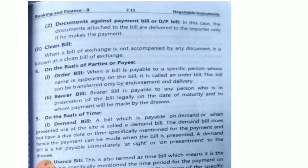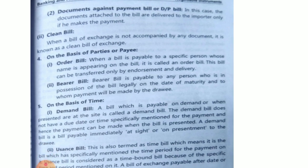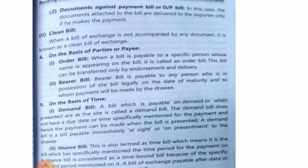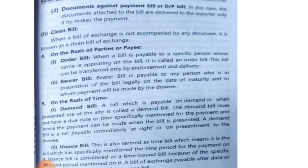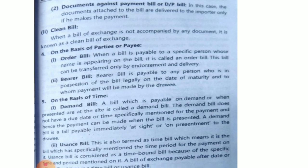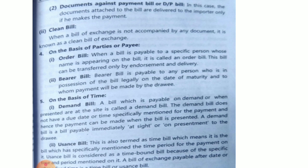On the basis of parties or payee, the first type is the order bill. When a bill is payable to a specific person whose name appears on the bill, it is called an order bill. The bill can be transferred only by endorsement and delivery. The second type is the bearer bill — a bearer bill is payable to any person who is in legal possession of the bill on the date of maturity, and payment will be made to them by the drawee.